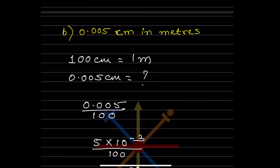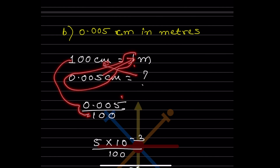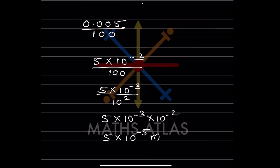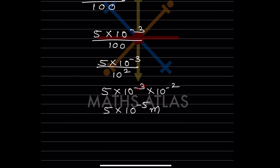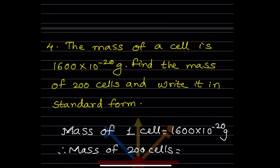For 0.005 cm in meters: 100 cm = 1 m, so we cross-multiply. 0.005 cm = 5 × 10^-3 cm. Dividing by 100 (which is 10^2): 5 × 10^-3 / 10^2 = 5 × 10^-3 × 10^-2 = 5 × 10^(-3-2) = 5 × 10^-5 meters.